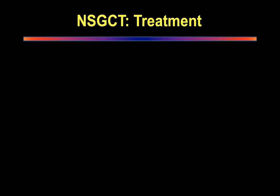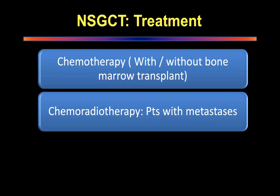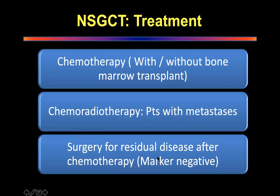Treatment for non-seminomatous germ cell tumors: chemotherapy with or without bone marrow transplant. If the patient has metastasis, chemoradiotherapy is recommended. Surgery is for residual disease after chemotherapy in marker-negative patients. The aim should always be R0 resection — do not use the word 'debulking' in the exam, as the aim should always be complete resection.